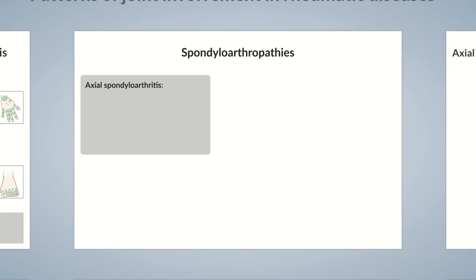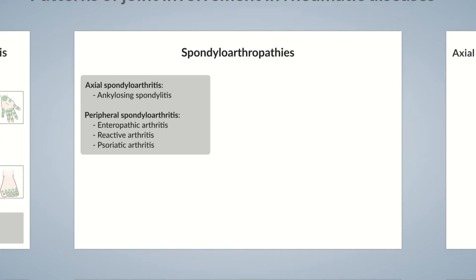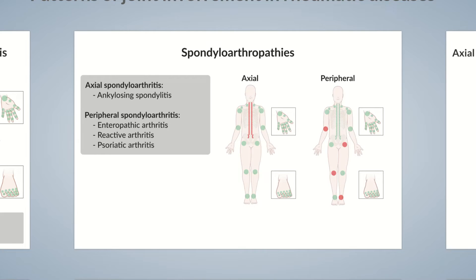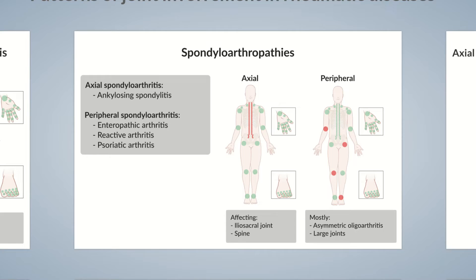On one hand, there is axial spondyloarthritis, which affects the axial skeleton, whereas peripheral spondyloarthritis affects the peripheral skeleton. You're already aware of a type of axial spondyloarthritis — ankylosing spondylitis. An x-ray of the spine usually shows changes in the vertebral bodies. Examples of peripheral spondyloarthropathies are enteropathic arthritis, reactive arthritis, and psoriatic arthritis. Spondyloarthritis with peripheral joint involvement is characteristic of asymmetric large joint oligoarthritis, where only a few large joints are affected without symmetrical involvement.